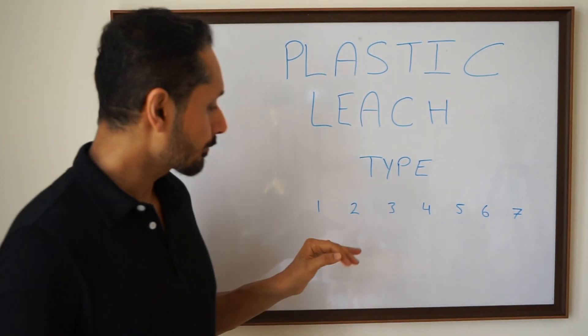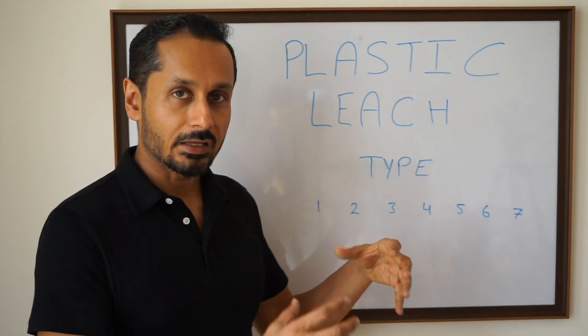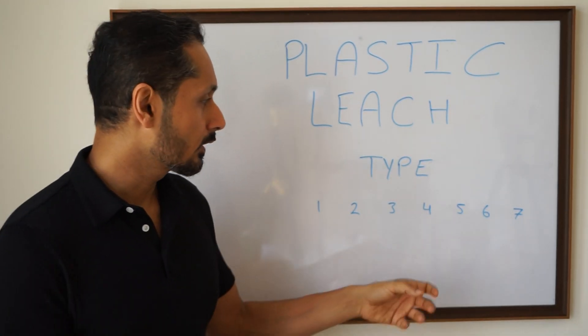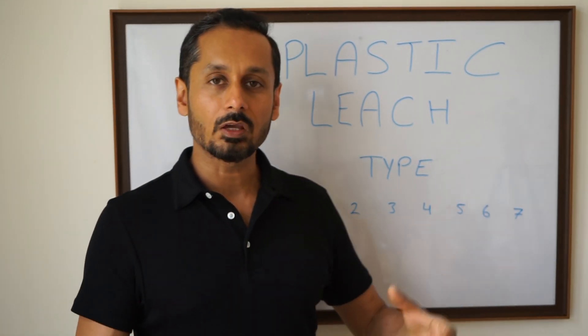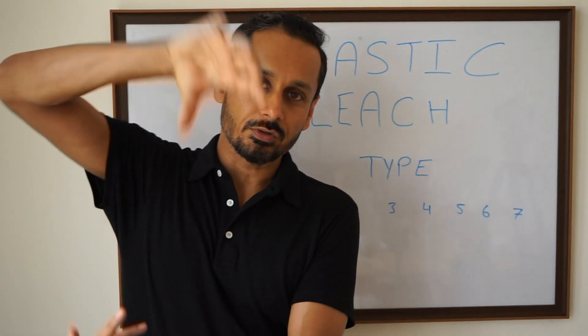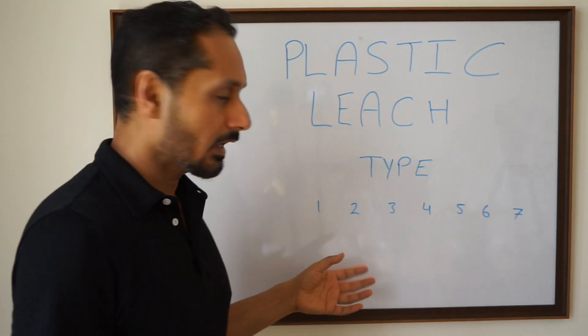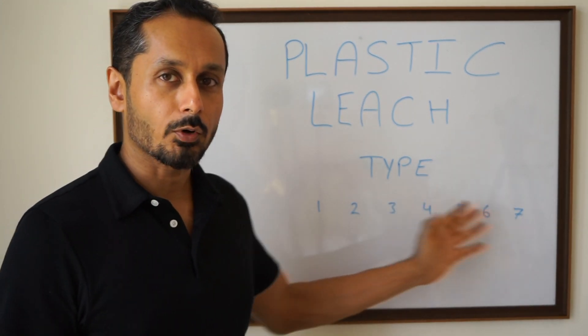So there are other types. Four is supposed to be better—that's what like yogurt will come in, a four. Seven is those big water containers that they have in offices which are upside down. But as I read about it, you know, everyone has their own set of problems.